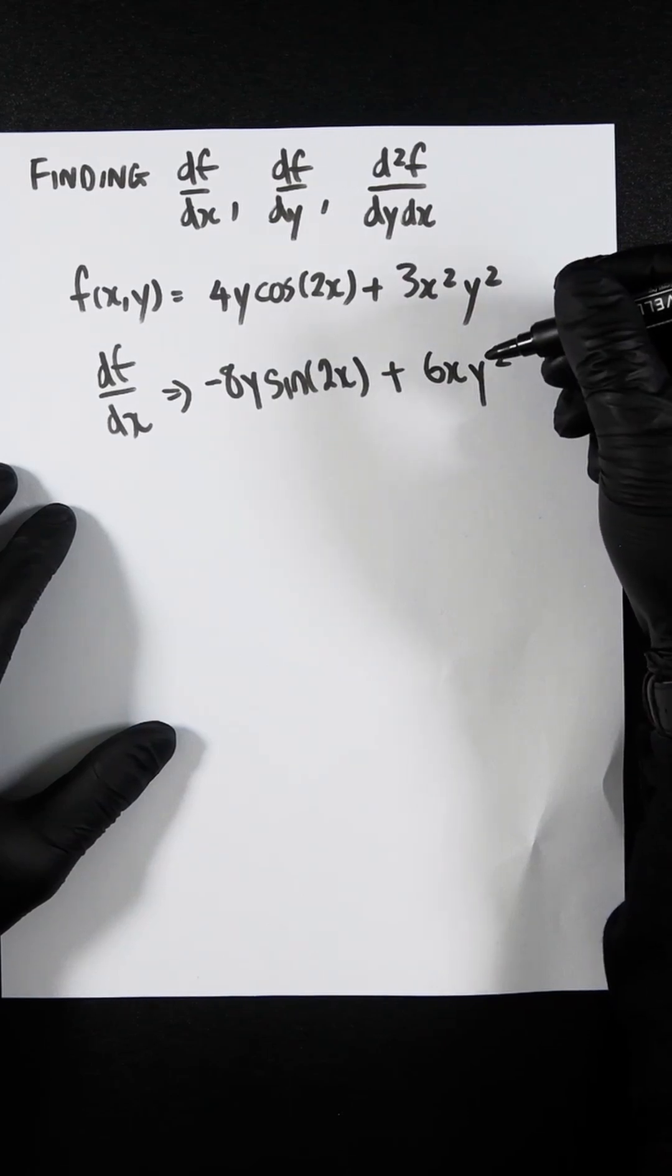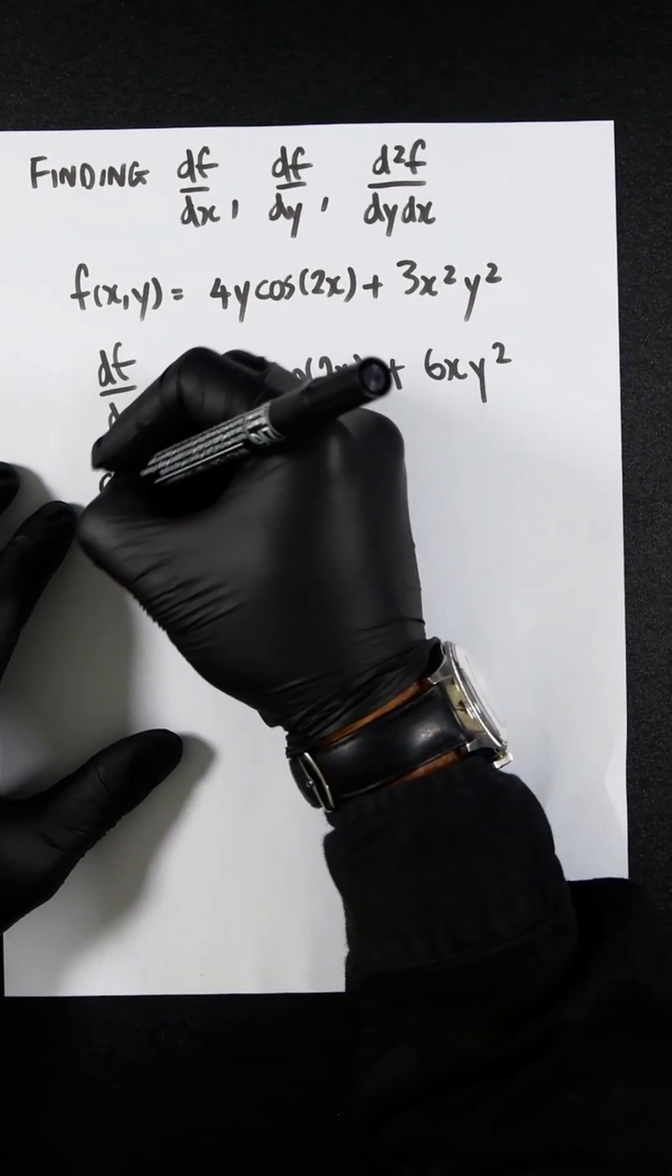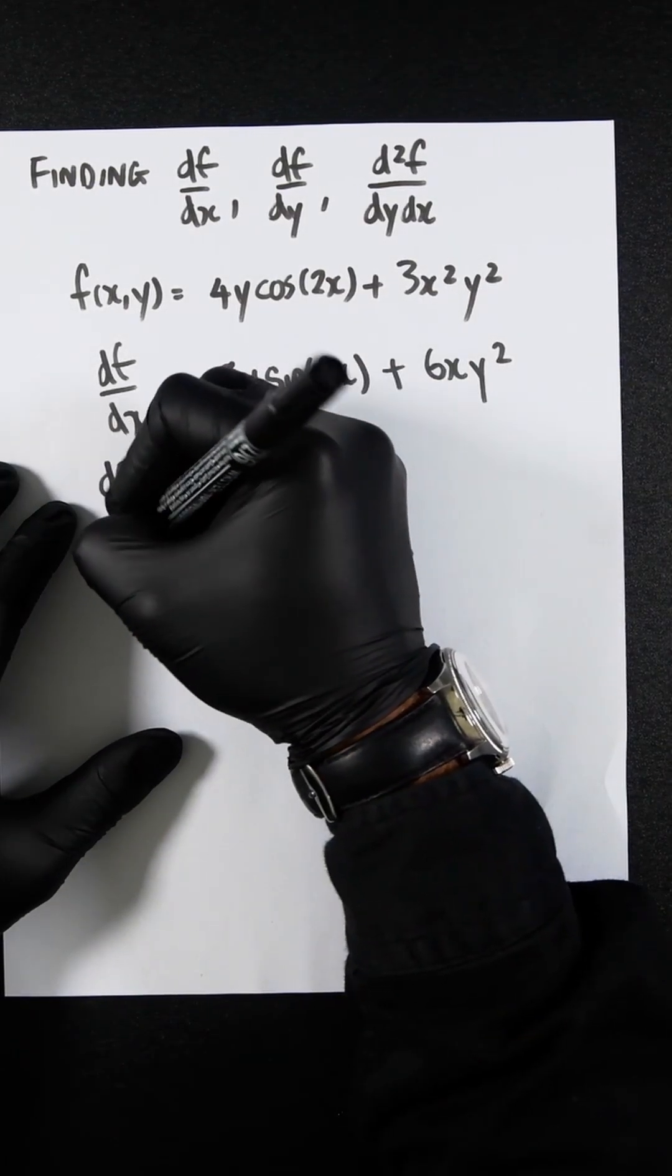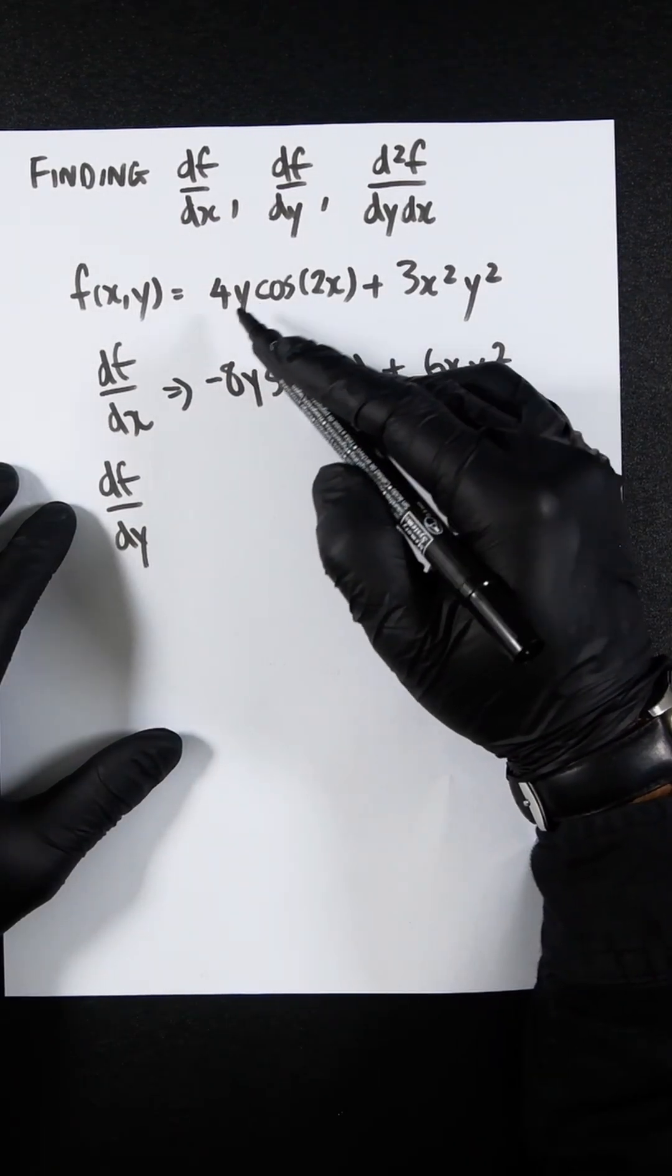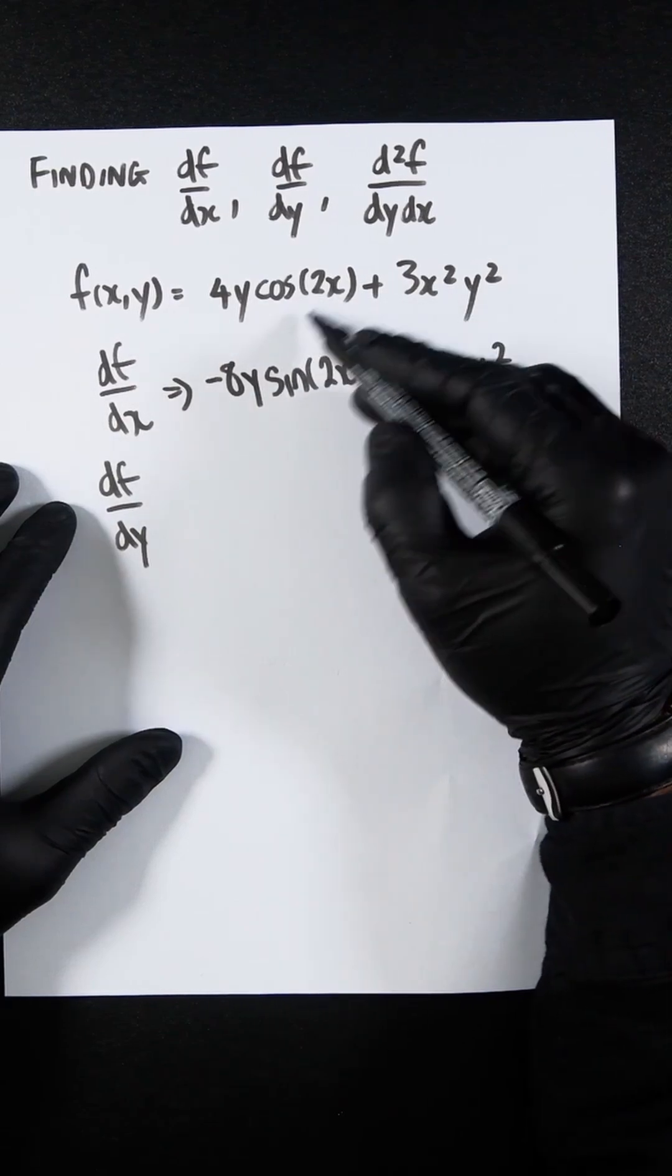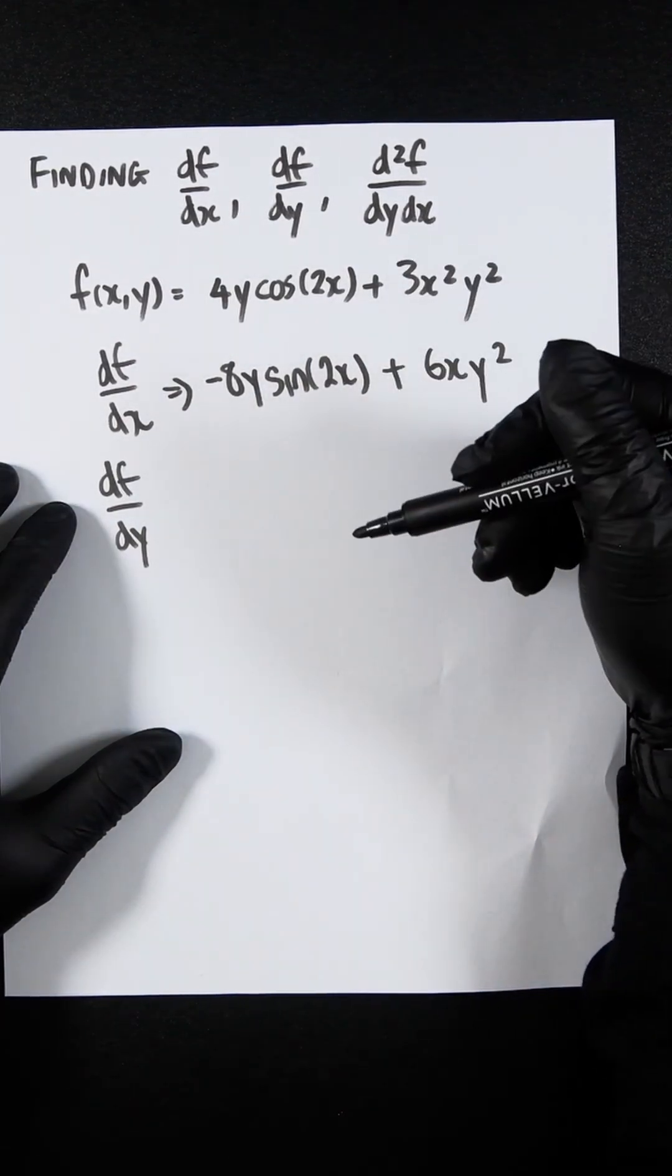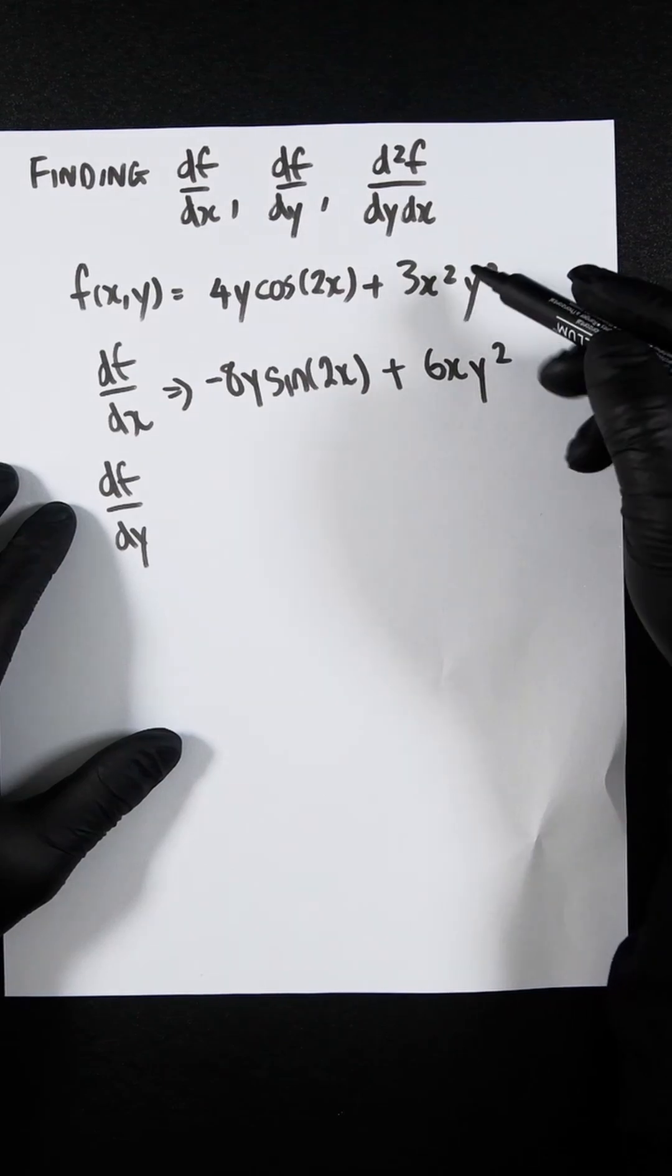If we needed to do df/dy, we would differentiate everything which is associated with the y term and ignore or hold constant the cos 2x or 3x².